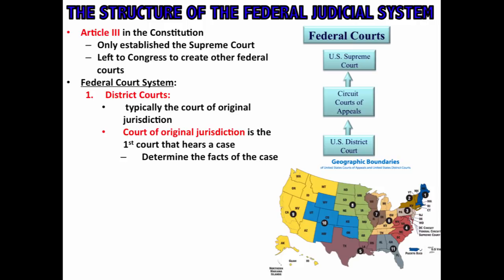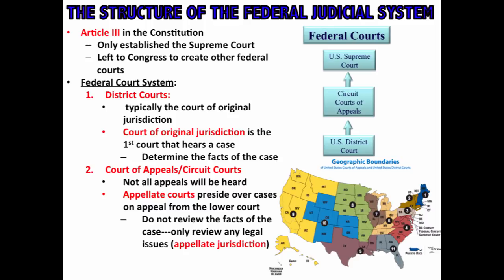Whoever loses at the district court level can appeal the decision, which means the case would go to a court of appeals, or circuit courts. Not all appeals will be heard, but appellate courts preside over cases on appeal from the lower courts. Appellate courts do not review the facts of the case — they only review legal issues. They have appellate jurisdiction, meaning they can only examine if a lower court made a mistake interpreting the law or legal procedure. At the appellate level, you're looking at errors of law, not of facts.